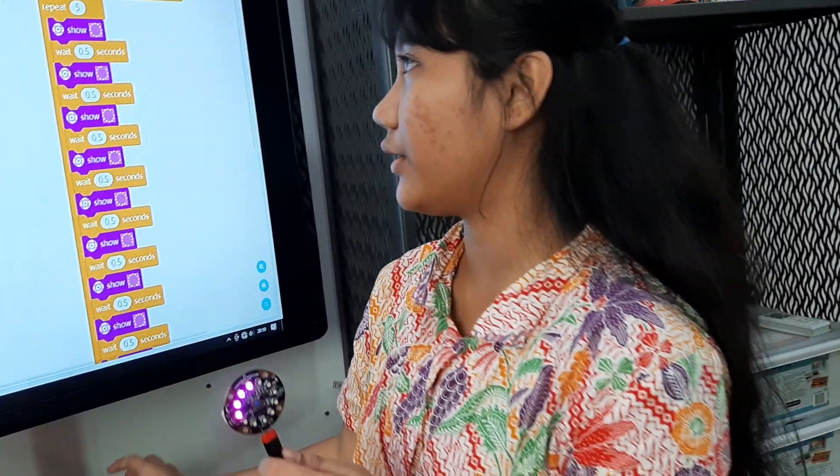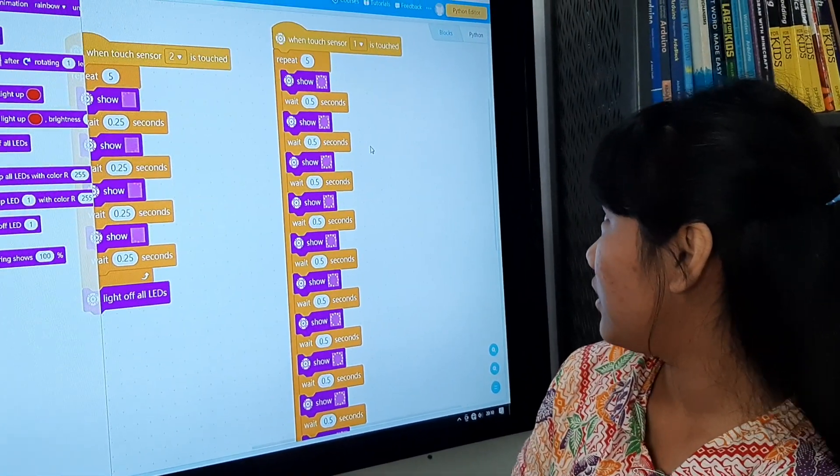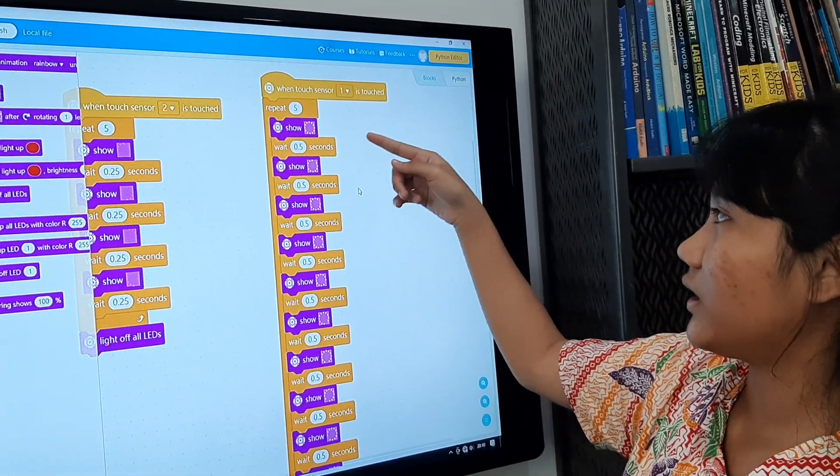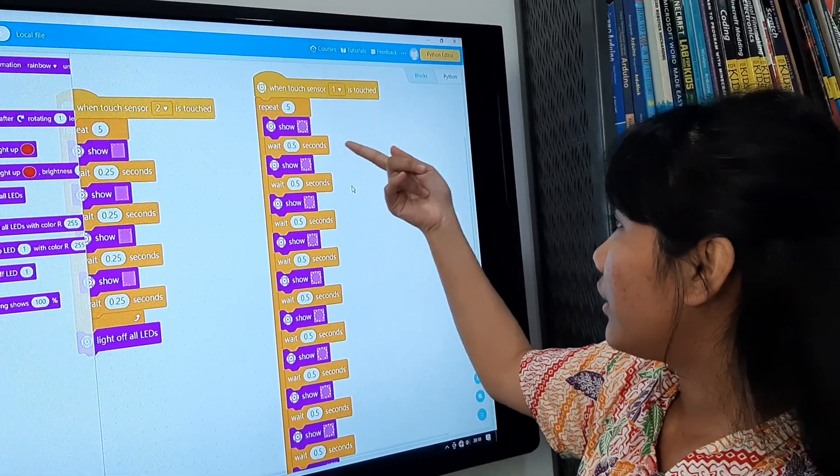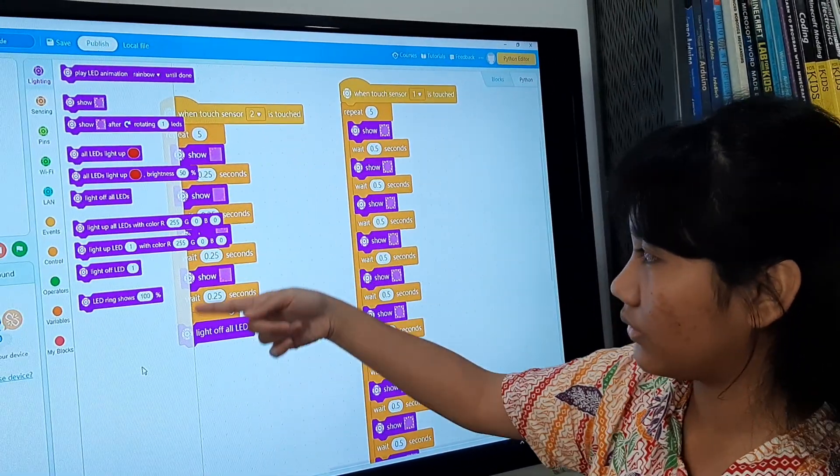And here are the codes I use. When touch sensor one is touched, I will repeat so that the lights will loop. And then I use this code, the show codes, because it's easier than all these codes.